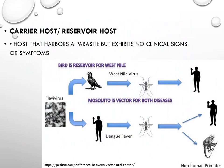Next is the carrier host — a reservoir host that harbors a parasite but exhibits no clinical signs or symptoms. An example involves flaviviruses: birds are the reservoir for West Nile virus, and the mosquito acts as a vector for both West Nile virus and dengue fever, transmitting disease to human beings as well as to non-human primates like monkeys. The mosquito thus acts as a vector, while birds act as a carrier or reservoir host.